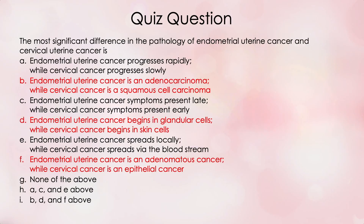In video number 342, I taught you that it's the skin cells at the transformation zone that become cancerous in cervical cancer. Skin cells are epithelial cells, so epithelial cells that become cancers are called epithelial cell cancers. The name of the epithelial skin cells at the transformation zone in your cervix is squamous cells. So option B says it's a squamous cell carcinoma, option D says it begins in skin cells, and option F says it's an epithelial cancer. The answer that includes all three of those is I.